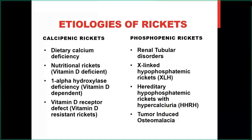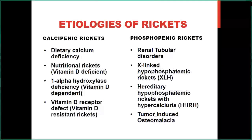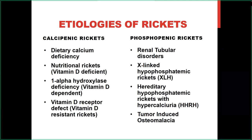Calcipenic rickets is most commonly caused by vitamin D deficiency. More rarely, it can be caused by dietary calcium deficiencies or underlying genetic etiologies, which include one-alpha hydroxylase deficiency — formerly known as vitamin D dependent rickets — or vitamin D receptor mutation, formerly known as vitamin D resistant rickets. One-alpha hydroxylase is the enzyme important for conversion of 25-hydroxy vitamin D to the active form, 1,25-dihydroxy vitamin D. In all forms of calcipenic rickets, you expect low phosphorus, calcium levels that may be low or normal, elevated PTH, and elevated alkaline phosphatase.